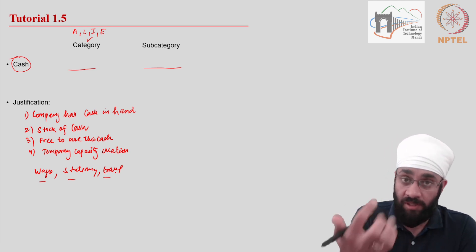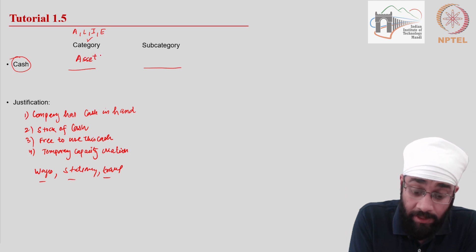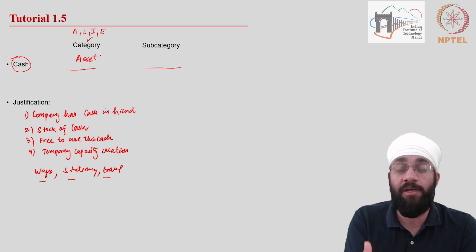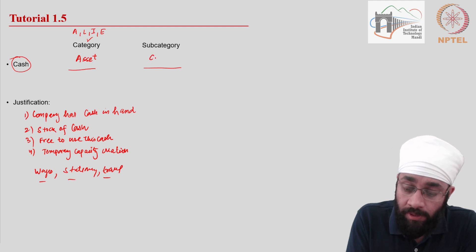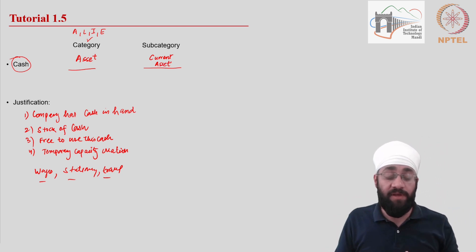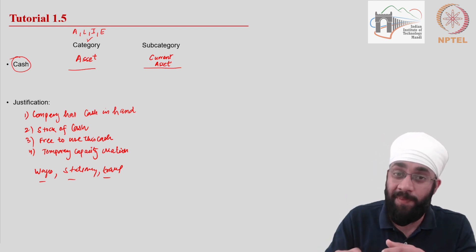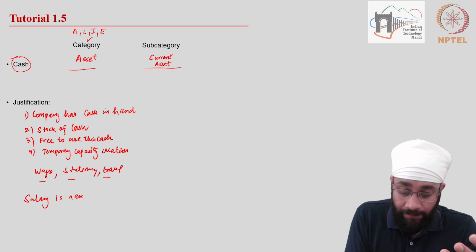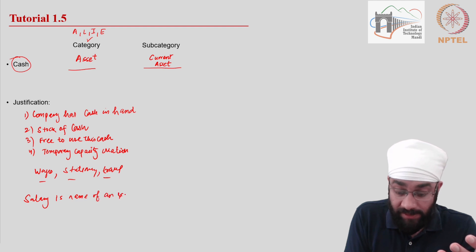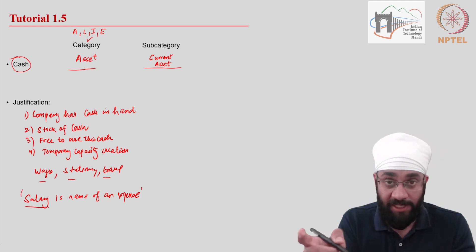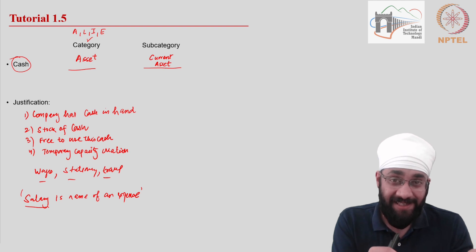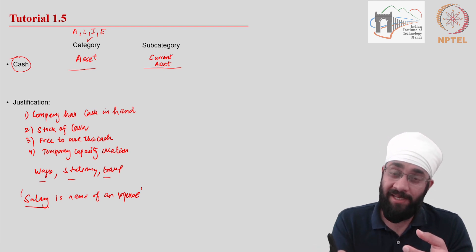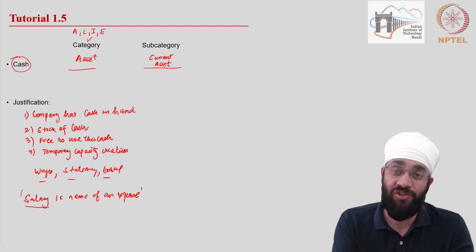This stock of cash is clearly an asset, as discussed earlier. It helps you generate capacity in the short run and generate income in the short run; therefore it is a current asset. Please do not confuse cash with expenses paid using cash. For example, salary is the name of an expense — salary is not equal to cash. An expense is made using the stock of cash that you have; they are two different things.